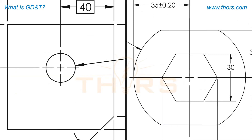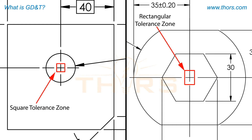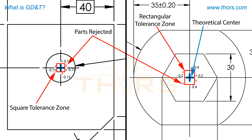For example, the tolerance zone used with coordinate tolerancing is square or rectangular. The tolerance zone is generated by adding the plus or minus tolerance value to either side of the theoretical center. This type of tolerance zone sometimes causes good parts to be rejected.